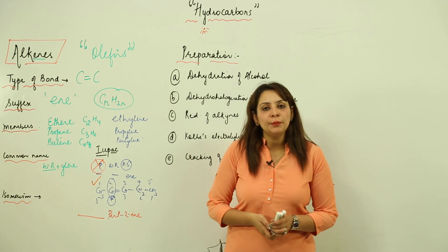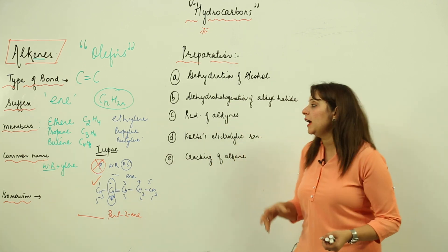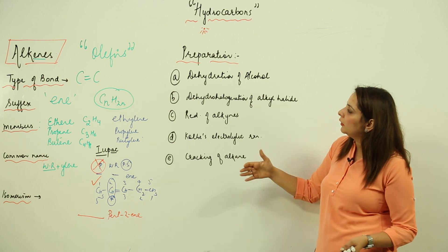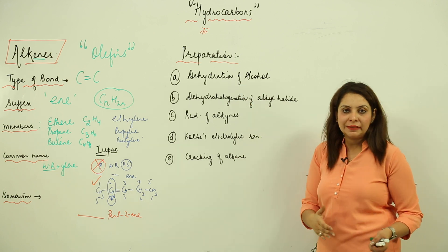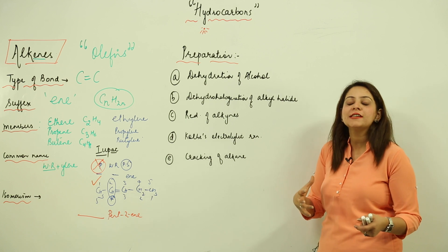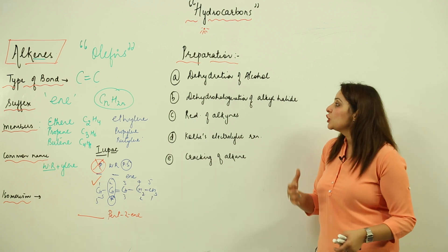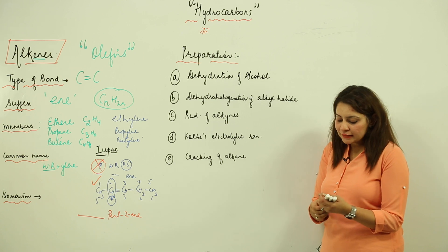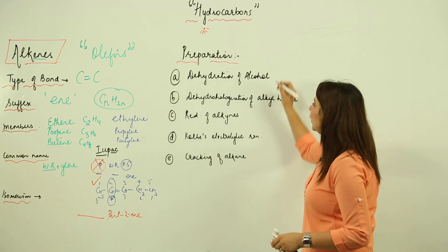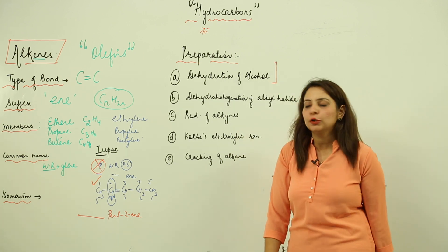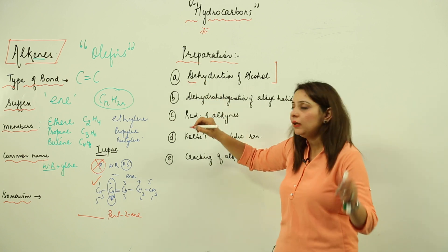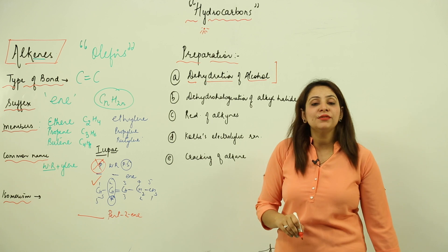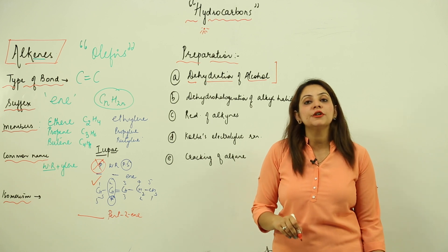Now we are going to start with the preparation of alkenes. There are many methods, and five important ones are included in the syllabus. The first method is dehydration of alcohol — 'de' means removal, and 'hydration' means water, so we need to remove water from alcohol.